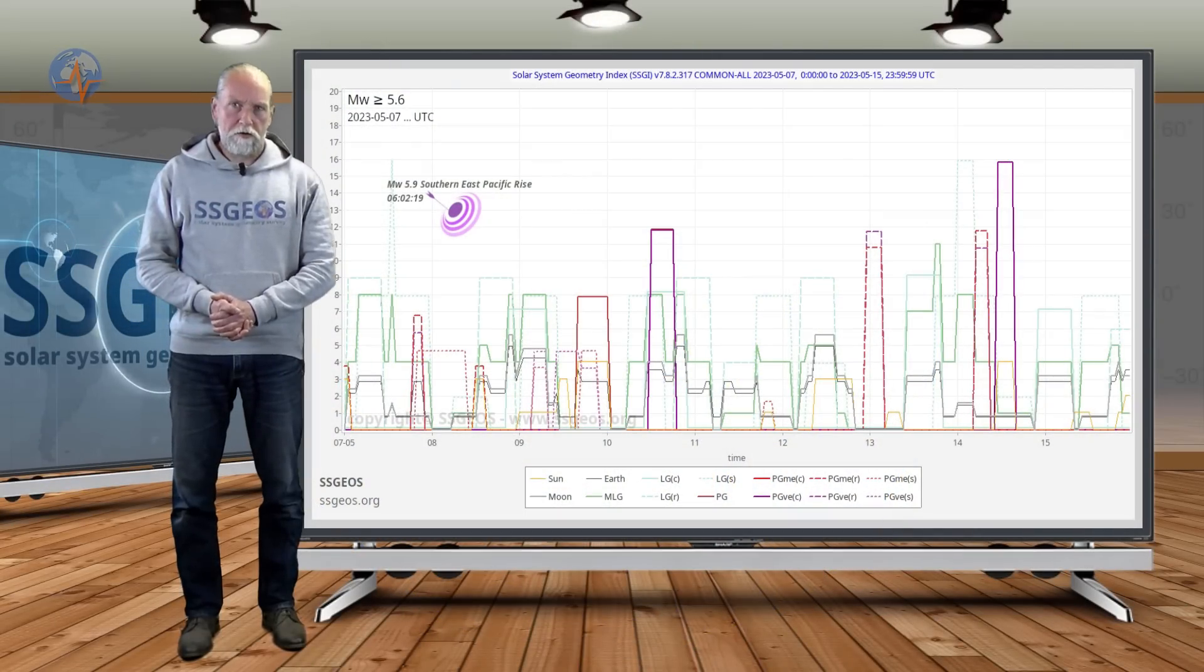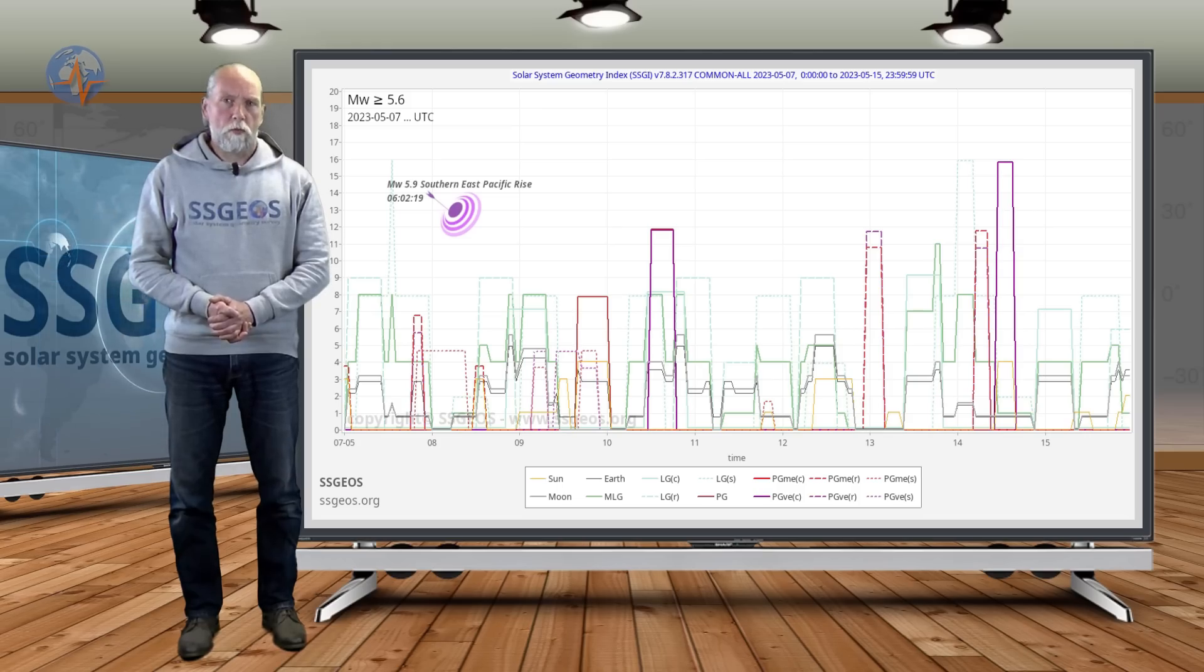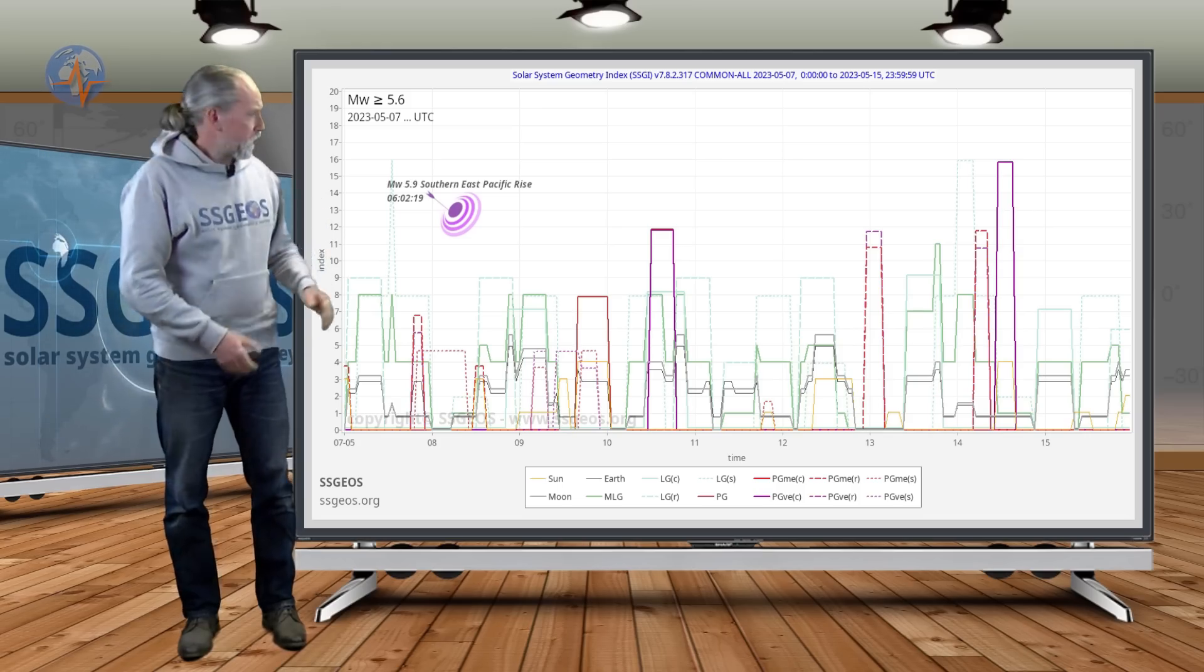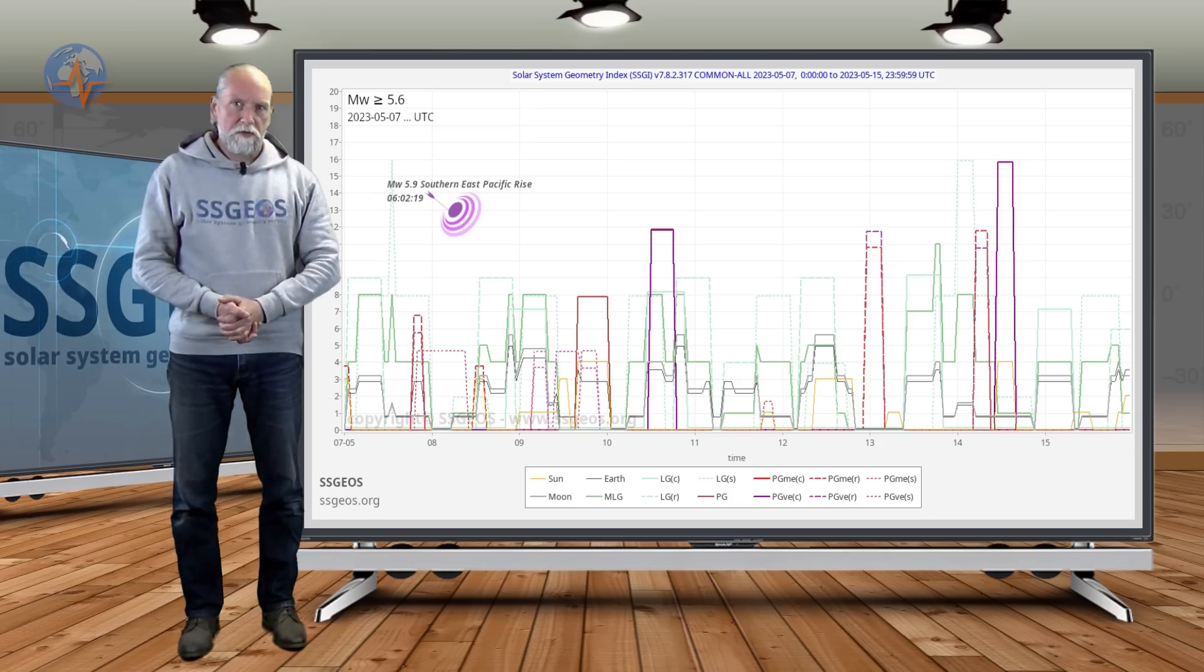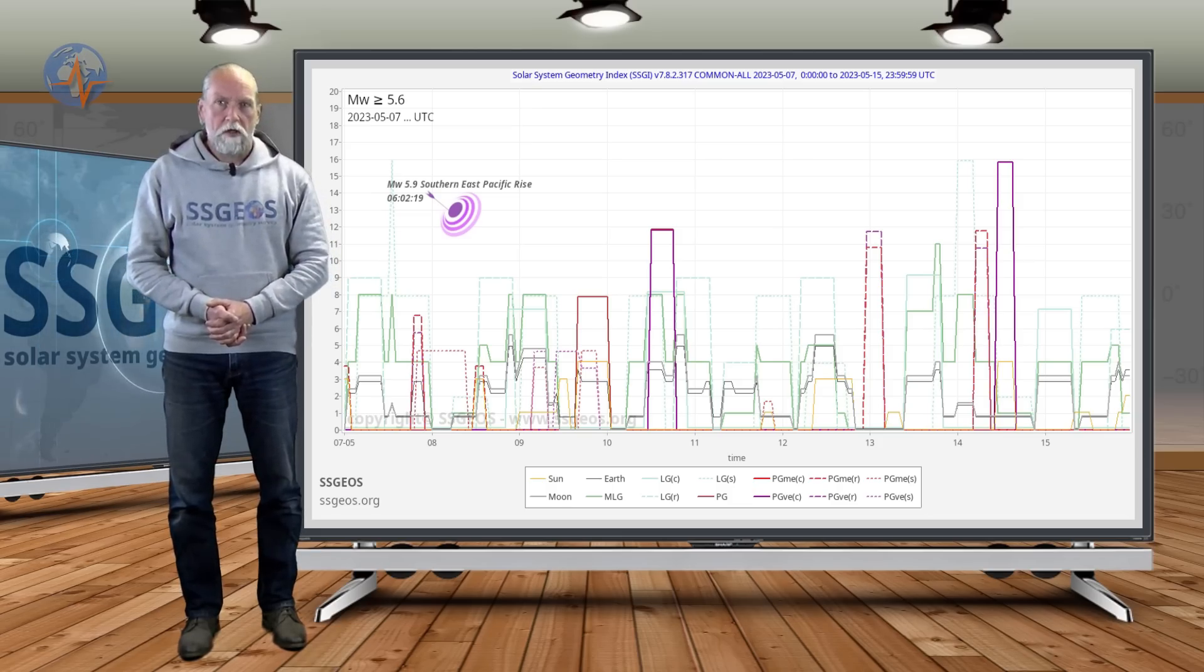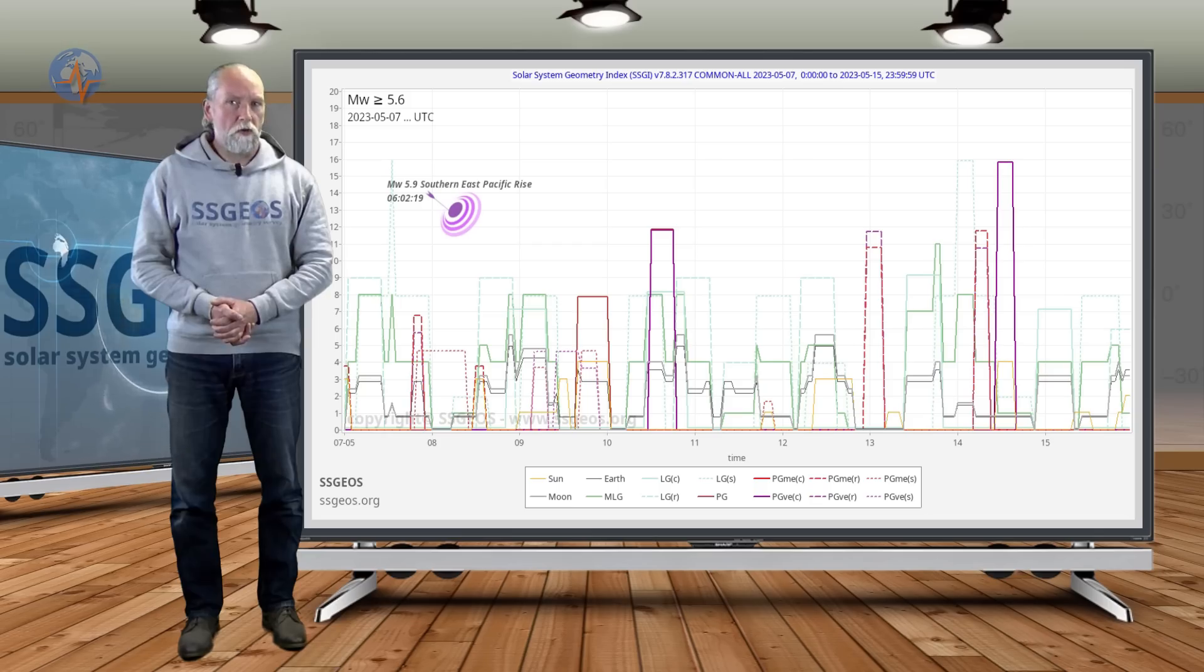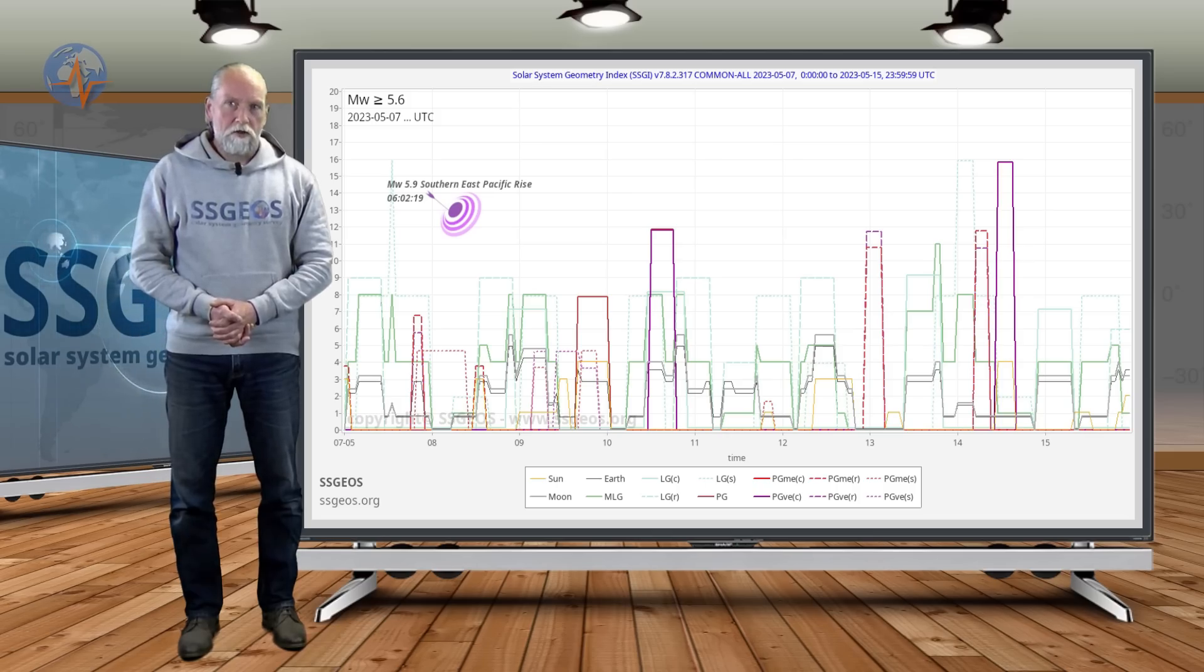Welcome to a new planetary and seismic update. As anticipated, we had some stronger seismic activity following the critical planetary geometry on the 7th. As you can see, a magnitude 5.8 to 5.9 at the southern East Pacific Rise, west of South America and Chile. It's the only stronger seismic event, so we did not have a clustering this time. It very much depends on the condition of Earth's crust exactly how the seismic response will be to the planetary geometry.